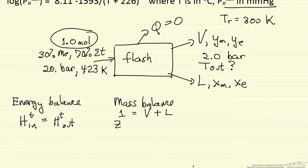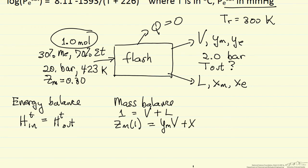I'll use Z to represent the mole fraction of methanol, so Z of methanol is 0.30 times one — that's the number of moles of methanol coming into the system. The number of moles of methanol leaving equals the mole fraction in the vapor phase times the moles of vapor, plus the mole fraction of methanol in the liquid phase times the moles of liquid. We could write another equation for ethanol, but it would be redundant with the total mass balance.